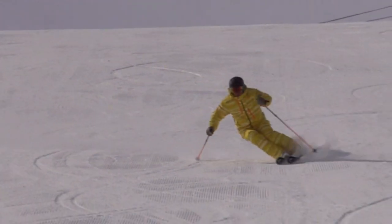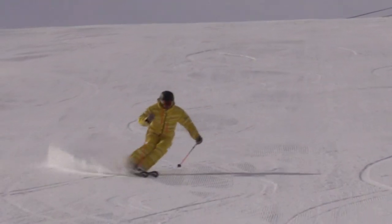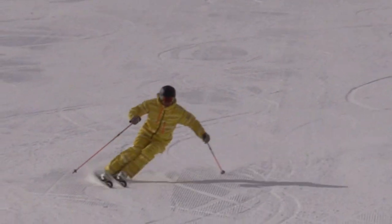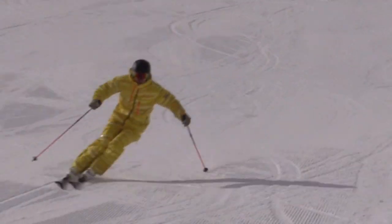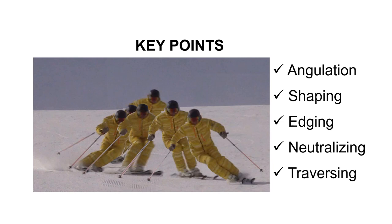To achieve this ideal short turn and the flow in your turns, you have to fulfill five key points in the turn itself. These five key points are: angulation for pressure control, turn shaping for speed control, etching to bend your skis, neutralizing to release your edges, and traversing for floating. About more details like how and why you need these five key points, I will talk in my next video.